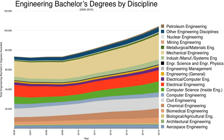In Bangladesh, engineering schools include Bangladesh University of Engineering and Technology (BUET), Dhaka University of Engineering and Technology (DUET), Rajshahi University of Engineering and Technology (RUET), Chittagong University of Engineering and Technology (CUET), Khulna University of Engineering and Technology (KUET), Sylhet Engineering College, Mymensingh Engineering College (MEC), and Jashore University of Science and Technology.